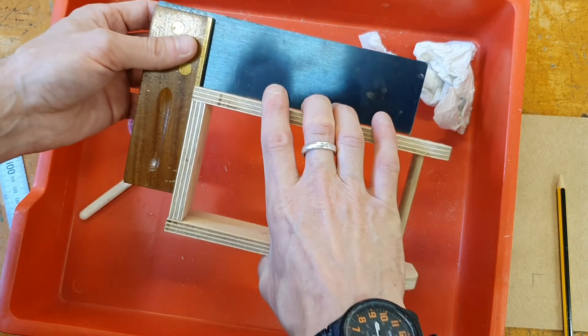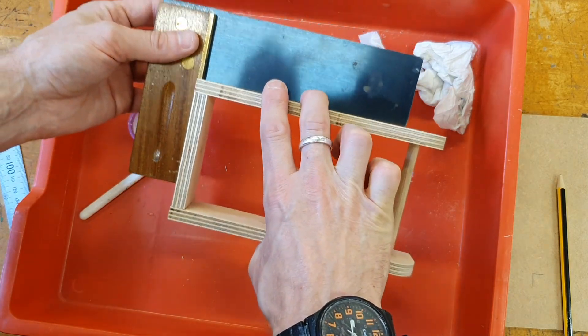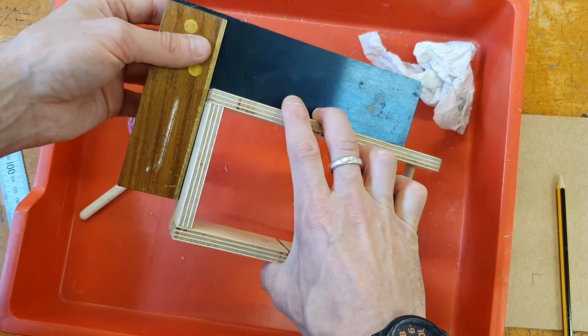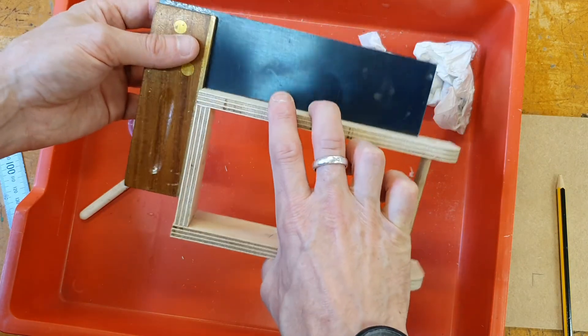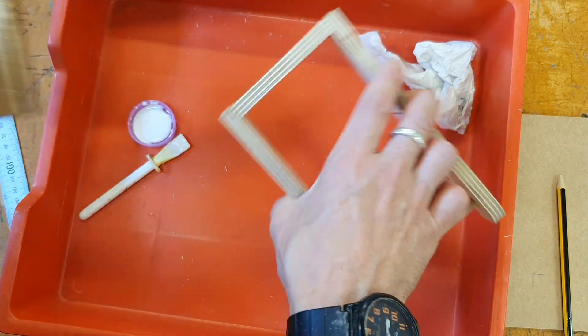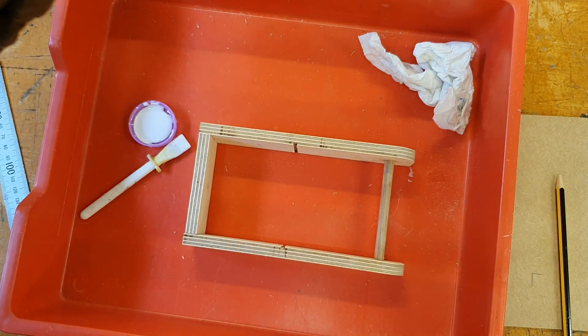My last check to see if it's square is just put a try square next to it. And if there's no gaps on the side of the try square between the wood, you know that these are right angles as well. Okay, good luck.